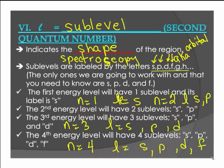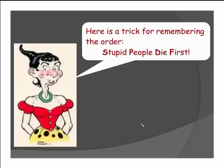There we go. Do this in class? I'm going to do this on the videos. It's life. Sorry about that. So that's how we get our ℓ values, and here's a trick a student came up with for remembering those. The order at first is stupid people die first. So that's how we can get our S, P, D, and our F.